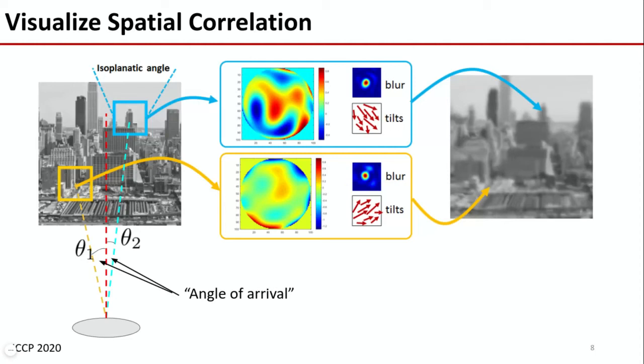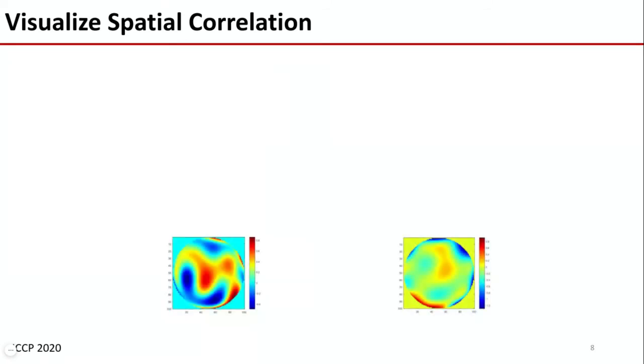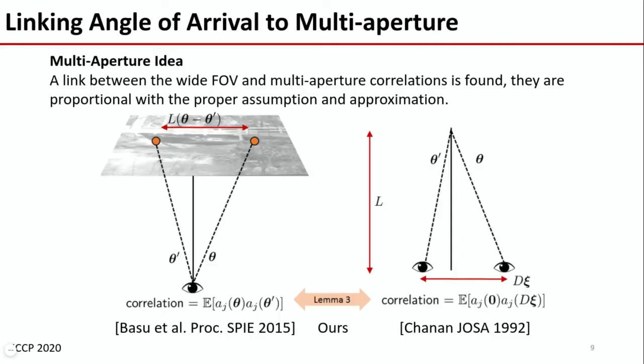What we then do is to strip away everything except for the wavefronts and put them in the following configuration. We then pretend instead that they are two wavefronts arriving at two different cameras, observing one point source and separated by some vector. It turns out that if we write out the integrations and assume a constant turbulent strength over the path, as well as use a first order approximation, the two correlations are proportional to one another. The link is then established between the angle of arrival correlations from Basu and multi-aperture correlations from Takato.